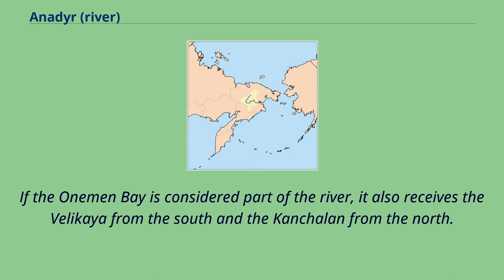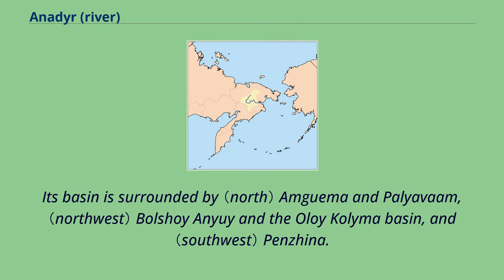If the One-Man Bay is considered part of the river, it also receives the Velikaya from the south and the Kanchilon from the north. Its basin is surrounded by Mgima and Palyavam, Bolshoy Anadyr in the Oloy-Kalama basin, and Penzina.